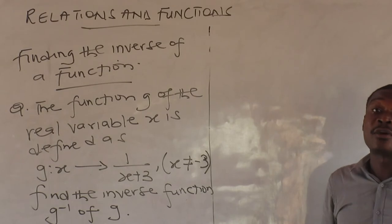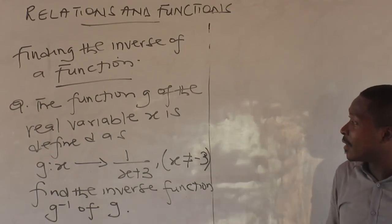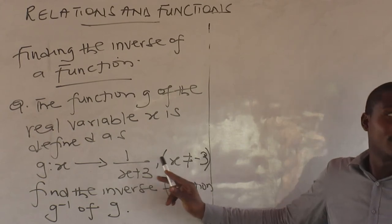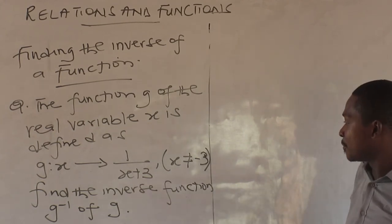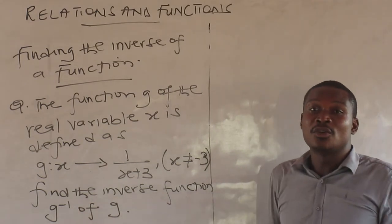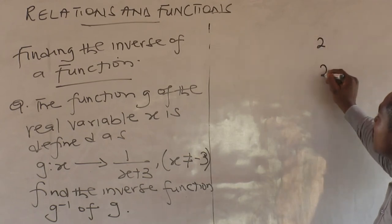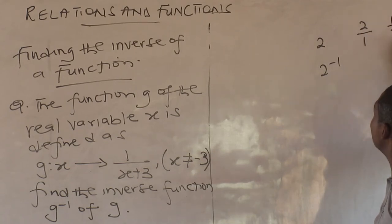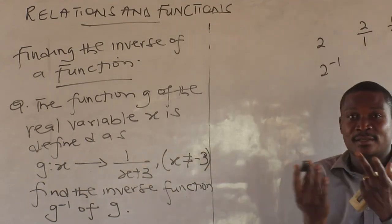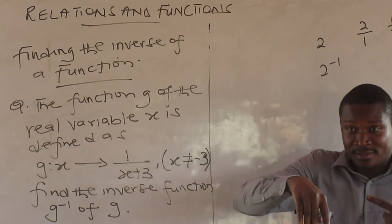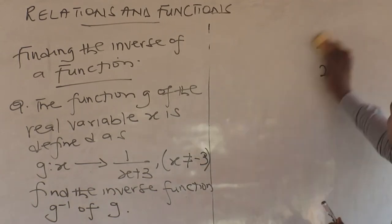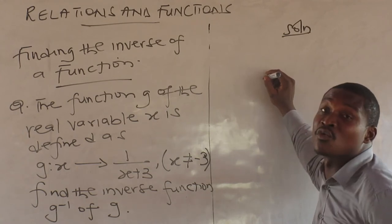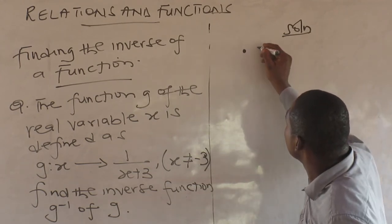Now, finding the inverse of a function. The function j of the real variable x is defined as shown. Find the inverse function, g inverse of j. Inverse has to do with exchanging something — turning it around. Think of two over one: the inverse is one over two. That's the same idea we'll apply here.